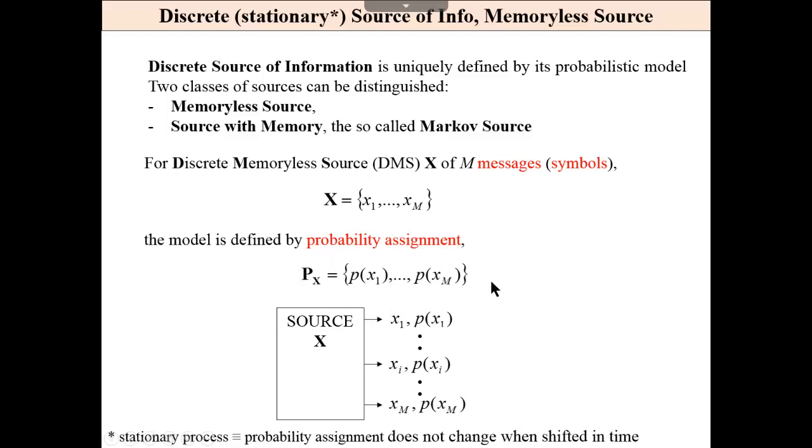If so, then we may say that we have a digital discrete memoryless source of information. Obviously, we assume that our process is stationary, which means that probability assignment does not change when we shift in time: today, tomorrow, or next year.